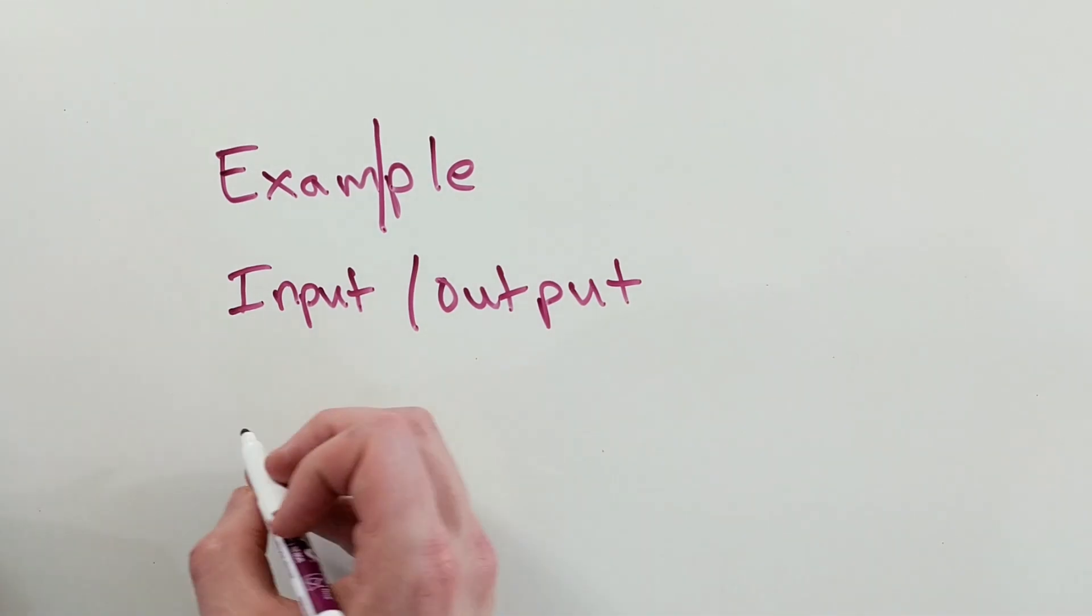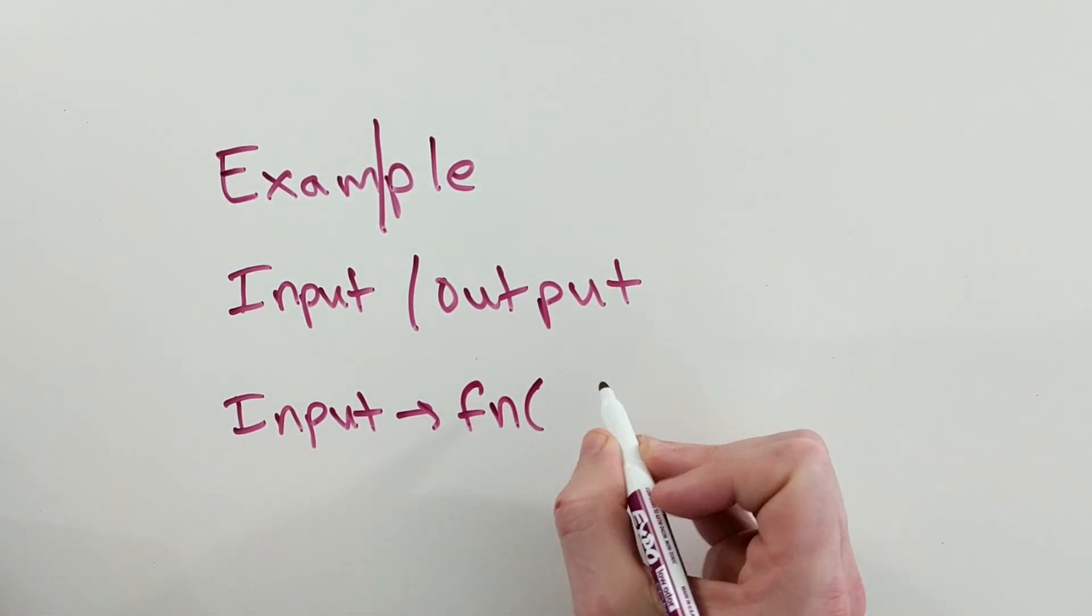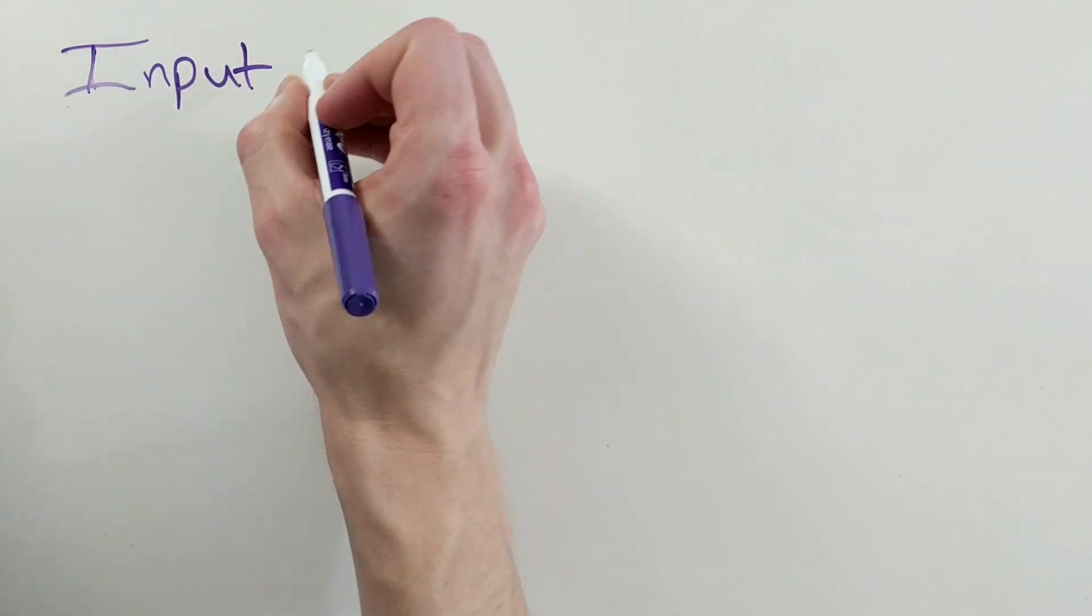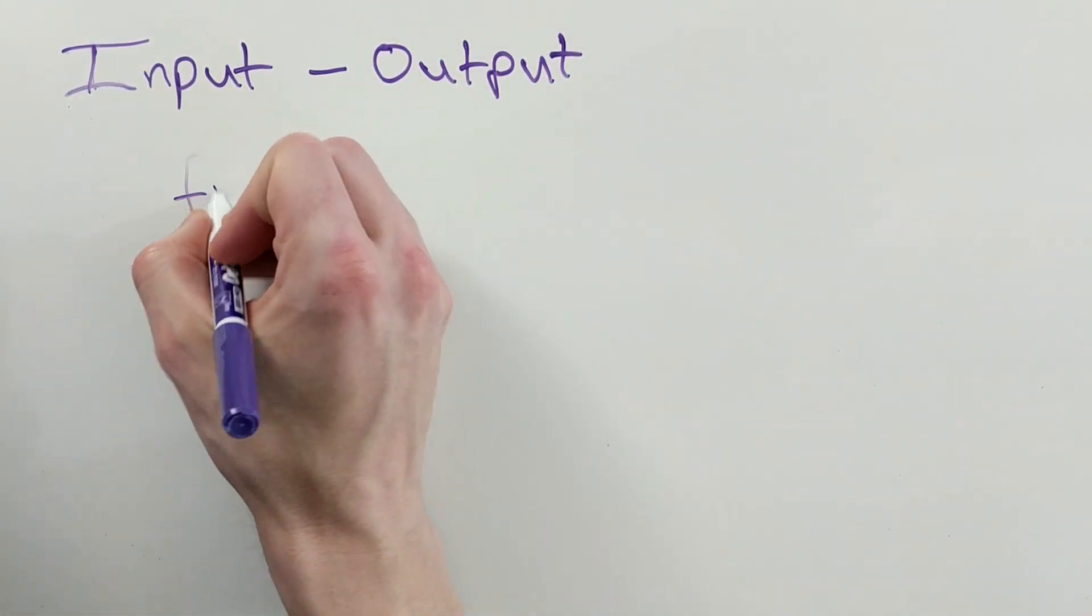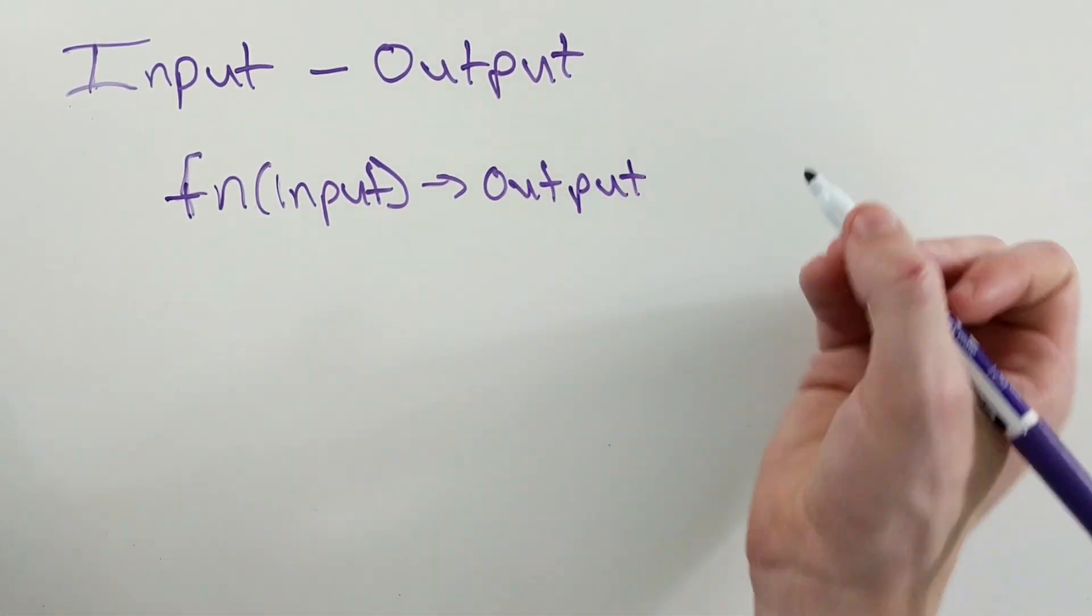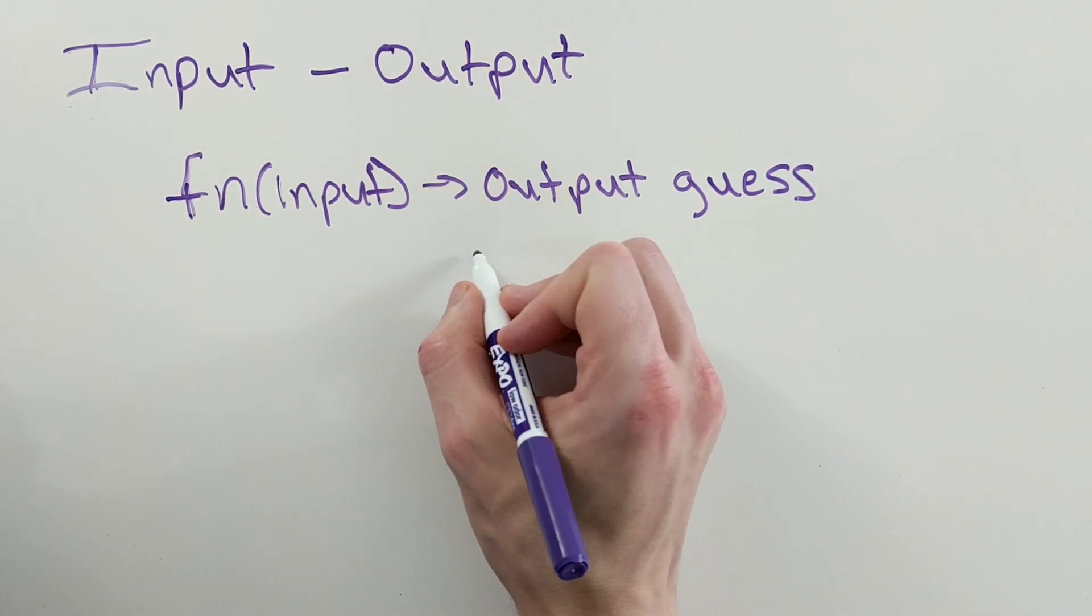We then assume that for any given input, there is some function that will give us the correct output. We then go through all of the input-output pairs in our dataset of examples, and for each pair we modify the function so that the function is just a little bit better at predicting the output given the corresponding input.